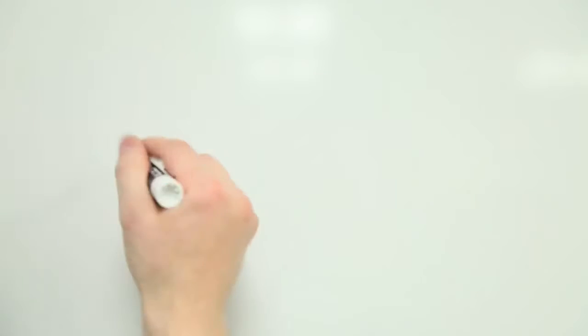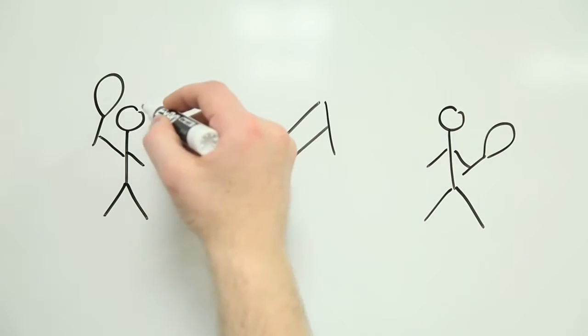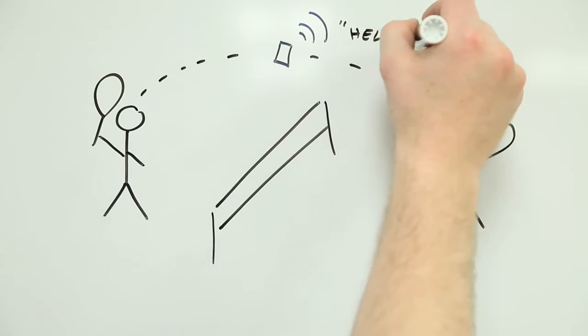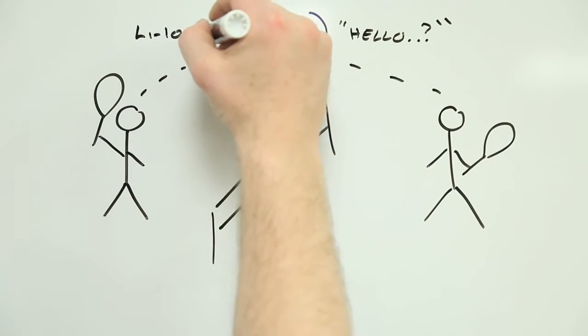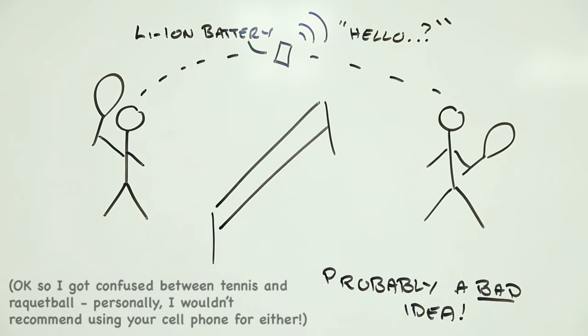For starters, most cell phones these days use lithium-ion batteries which, as a previous Risk Bites explored, can present a fire risk if you abuse them. But so long as you don't treat your phone like a racquetball, you're probably okay.